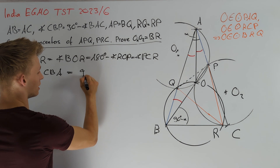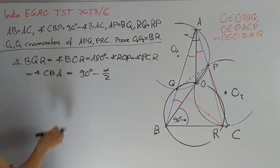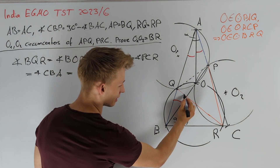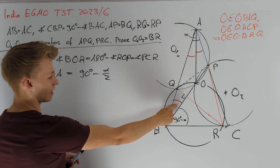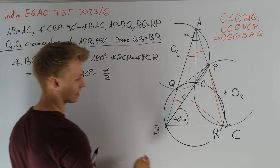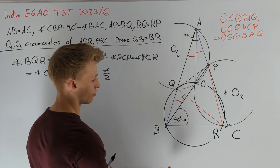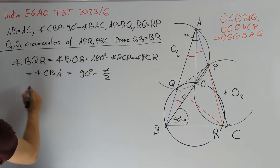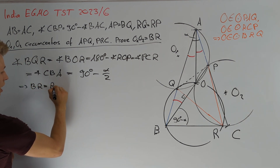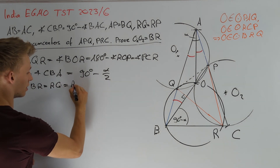From this angle condition we get two new properties. First, the angle here equals 90 degrees since the red angle equals alpha divided by 2. Second, angle RBQ equals angle BQR, so triangle RBQ is isosceles. Therefore BR equals RQ, and we already know RQ also equals RP.